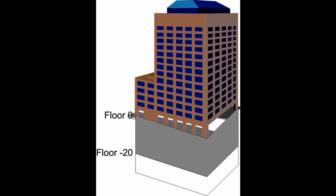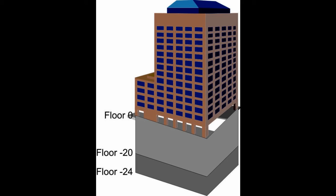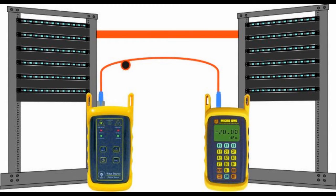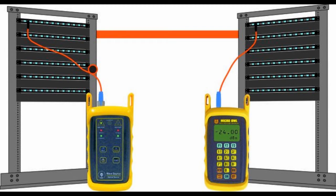Consider this helpful illustration: picture a facility with ground level being floor zero; floors below ground are given negative numbers, so floor minus 20 would be 20 levels below the ground floor. If you start at floor 20 and take an elevator to floor minus 24, you have dropped four levels. Relating this to decibels: if you started with minus 20 decibels through a short patch cable, then measured minus 24 decibels after connecting the testers to opposite sides of the link, the signal has dropped 4 decibels — meaning the fiber link has 4 decibels of loss.